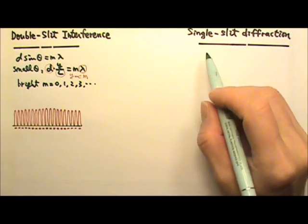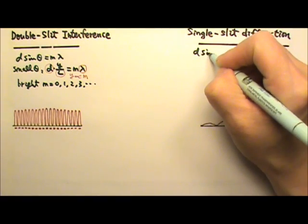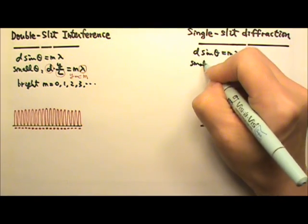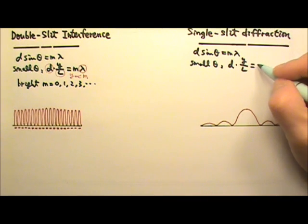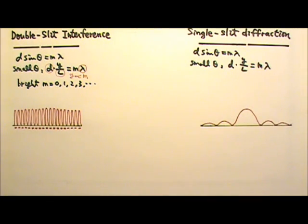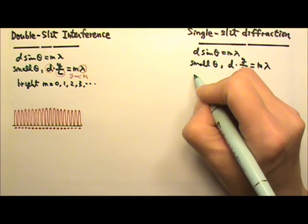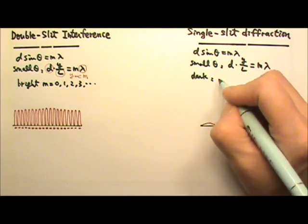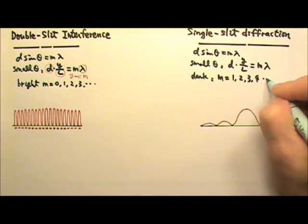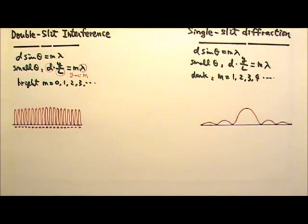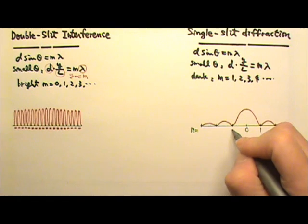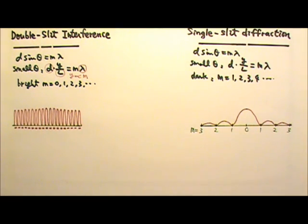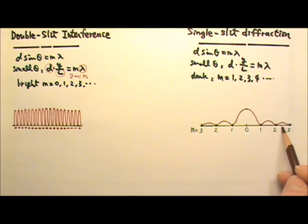For single slit diffraction, we have the same equation: d sine theta equals to m lambda. And again, for small angles, d sine theta, which can be replaced with y over l, equals m lambda. For the single slit patterns, we get dark fringes when m is 1, 2, 3, 4 — that kind of whole number, but not 0. That means if I label the m values on the screen, I would get 0 for the bright fringe and then 1, 2, 3 for the dark fringes. That's why we have a central maximum that is twice as wide, and the other fringes have the same size.